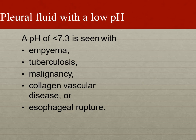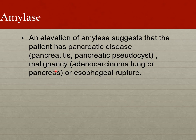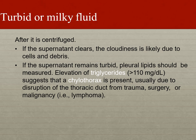Pleural fluid with pH less than 7.3 is seen in empyema, tuberculosis, malignancy, collagen vascular disease, or esophageal rupture — all causes of exudative pleural effusion. If pleural fluid amylase is increased compared to plasma, think of underlying pancreatic disease such as pancreatitis or pancreatic pseudocyst, or malignancies such as adenocarcinoma of the lung, pancreas, or esophagus. If pleural fluid is turbid or milky, centrifuge it — if the supernatant clears, the cloudiness was due to cell debris; if it remains turbid, calculate pleural fluid lipids, which will be elevated, diagnostic for chylothorax.